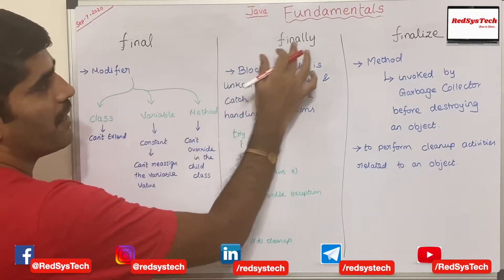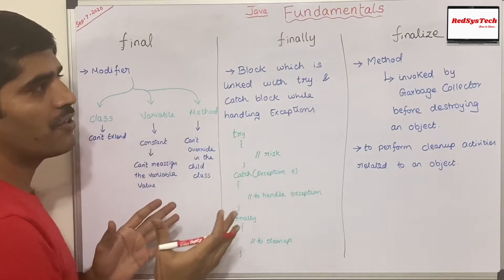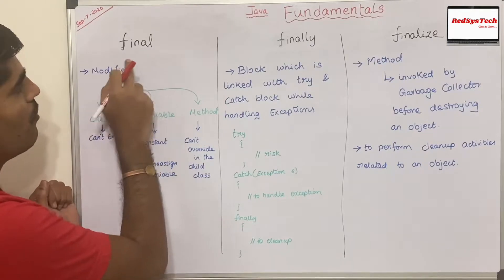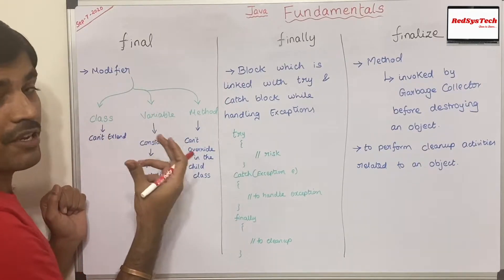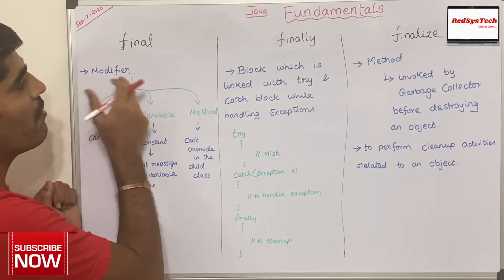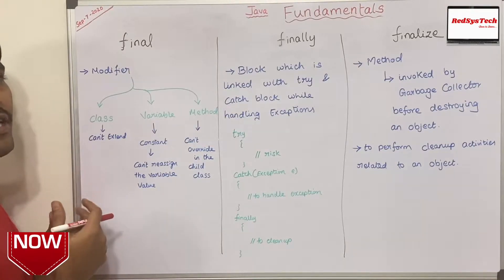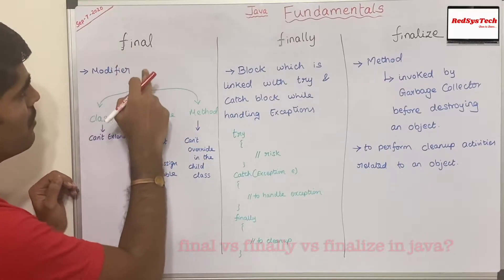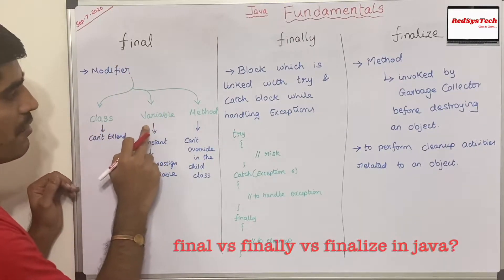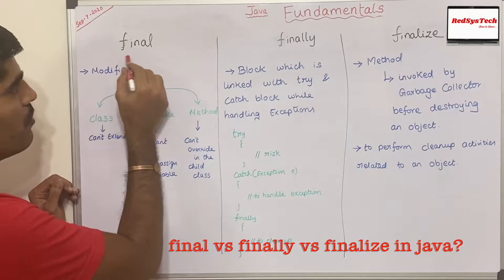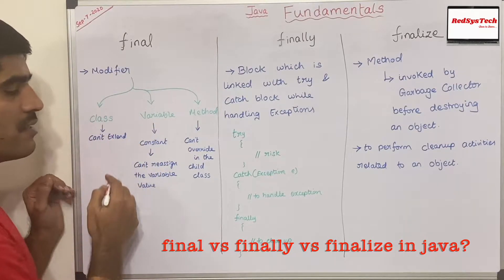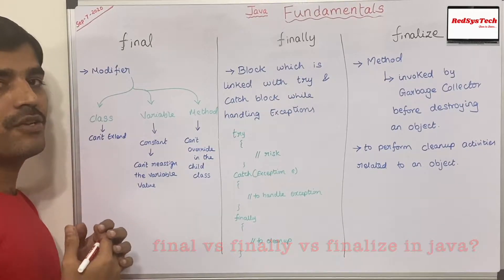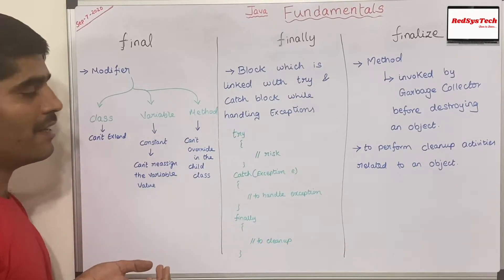We have three keywords: final, finally, and finalize. Most of the time interviewers ask about the difference between these three keywords. So, final is a keyword which is a reserved keyword in Java — it is a modifier. You can apply this final keyword to a class, a variable, or a method. Whenever you apply the final keyword to a class, it means you are telling Java that no one can extend that particular class.